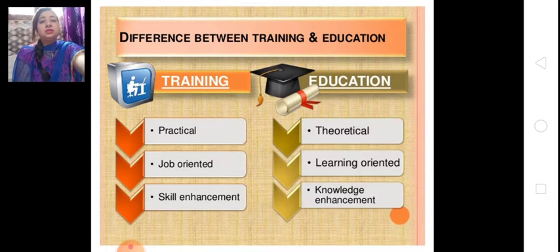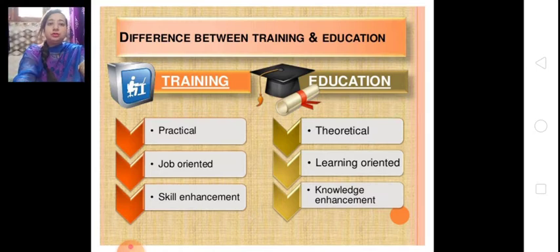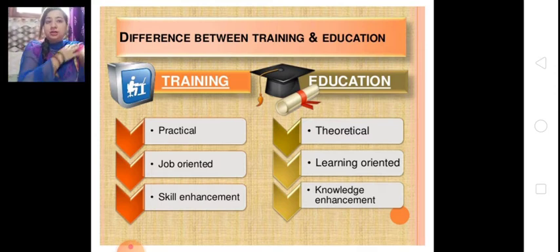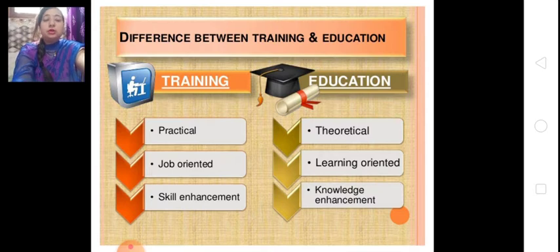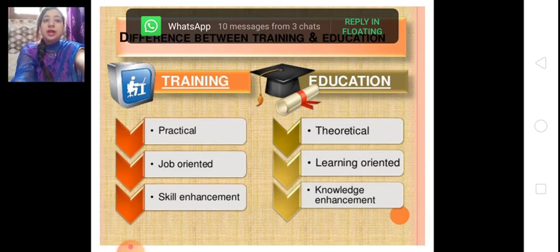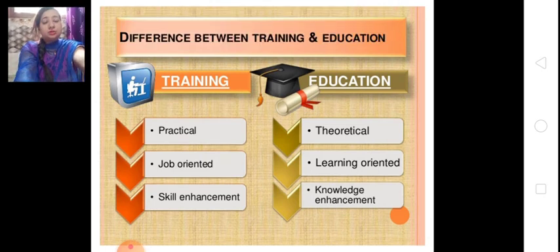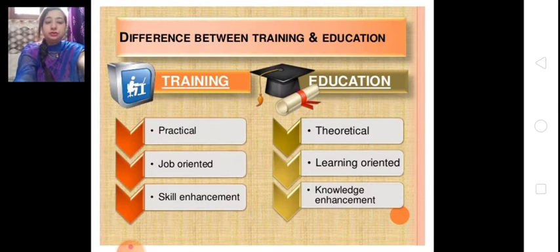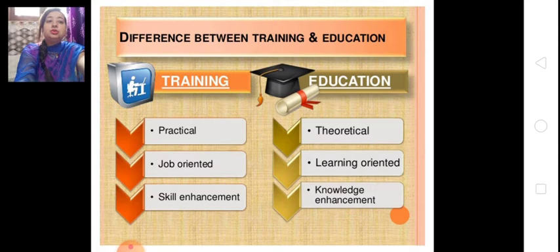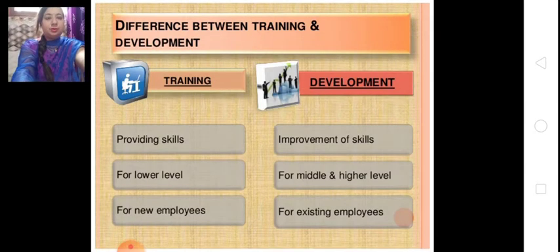Many students are confused about the difference between training and education. Education involves the theoretical part and training involves the practical part. Education is learning-oriented — the main objective of education is to learn. Training is job-oriented — we train an employee to let them do a job in a perfect manner. We give education to enhance knowledge and we give training to enhance skill.